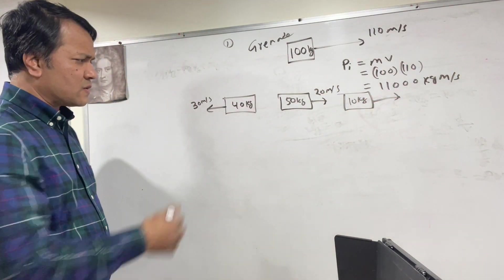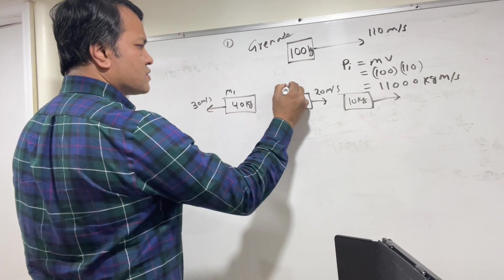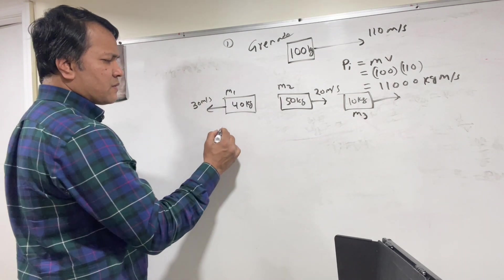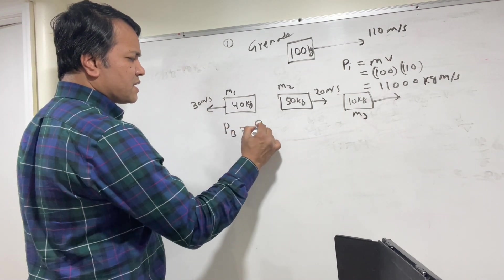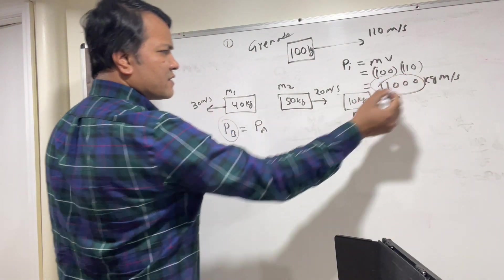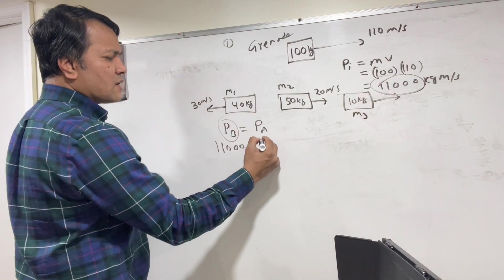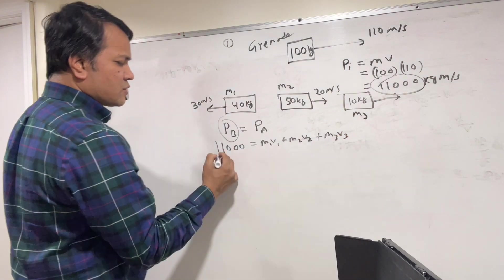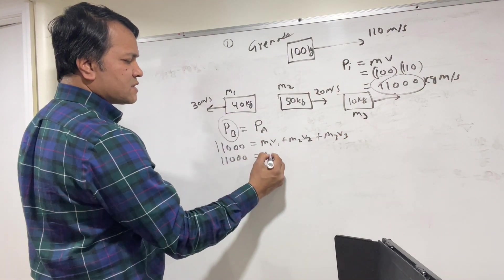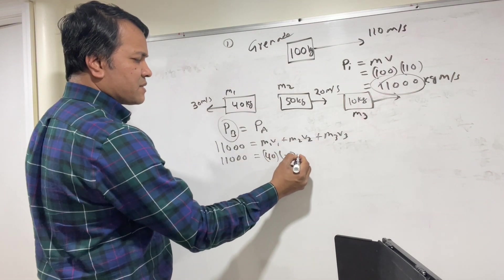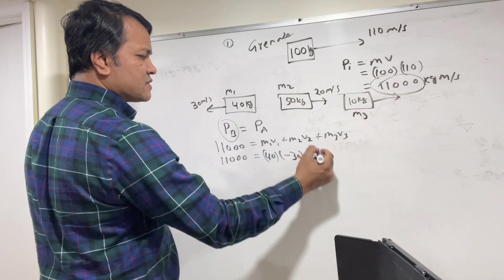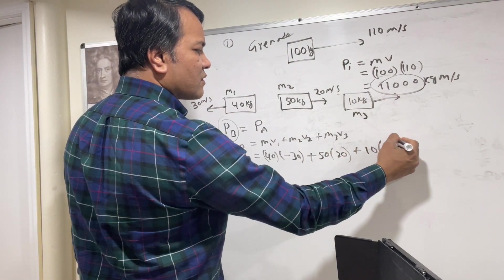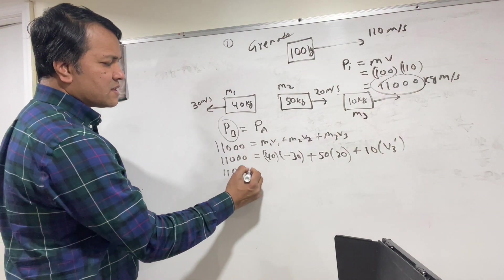Let's call them mass 1, mass 2, mass 3. Momentum before equals momentum after. Momentum before is already known: 11,000. So 11,000 = M1×V1 + M2×V2 + M3×V3. M1 = 40 and V1 = negative 30 (moving west). M2 = 50 and V2 = 20. M3 = 10 and V3 you want to find.